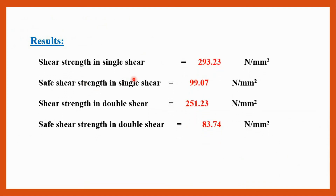So the final results: for single shear, the ultimate shear strength is 297.23 Newton per mm square and the safe shear strength is 99.07 Newton per mm square. For double shear, the ultimate shear strength is 251.23 Newton per mm square and the safe shear strength is 83.74 Newton per mm square. This concludes the experiment. Thank you all.